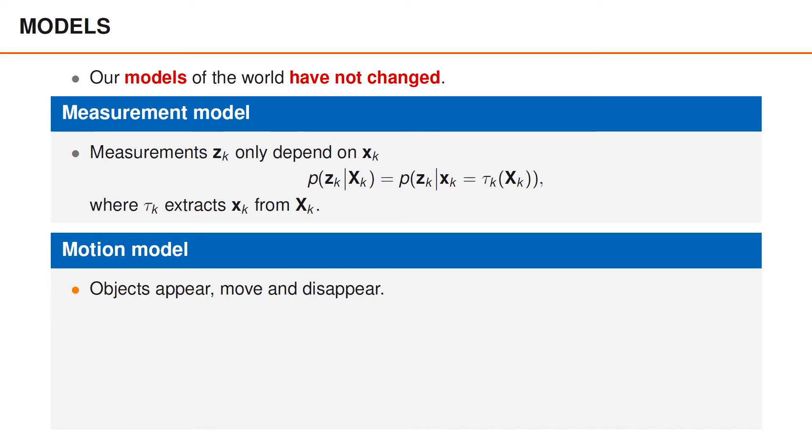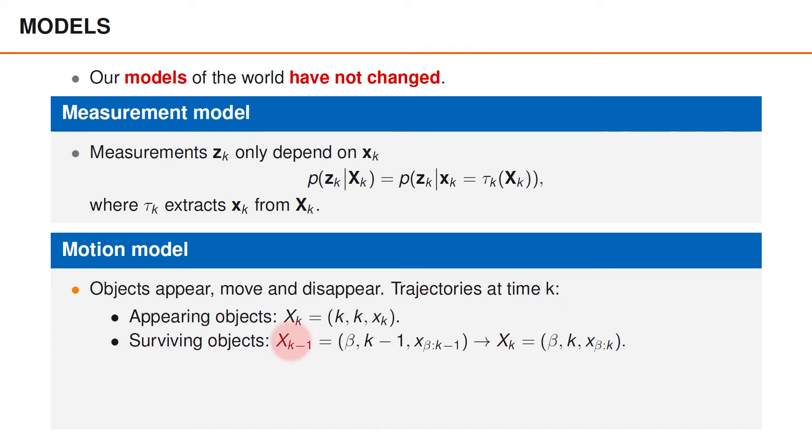To obtain a motion model, we simply need to express the model in terms of trajectories. First of all, if an object appears at time k, the variables beta and epsilon in its trajectory capital xk are both k. Second, an object which is present at time k-1 may survive until time k. If the object is present at time k-1, its value for epsilon at time k-1 must be k-1. And for a surviving object, epsilon then takes the value k at time k. Also, if the object survives, the trajectory is longer at time k than at time k-1, and the sequence has been extended by a vector xk.